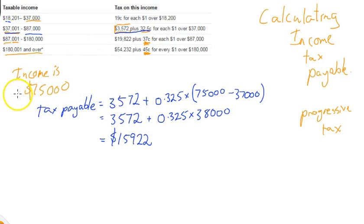$15,922. So, what this all means is that if you earn $75,000, then you have to pay $15,922 in tax.